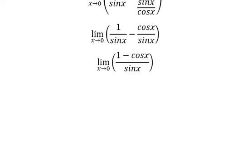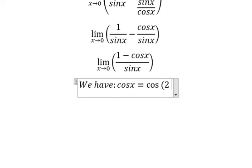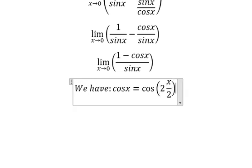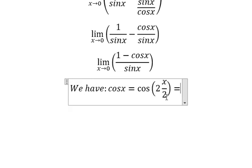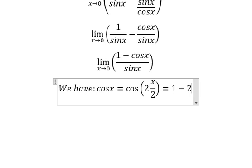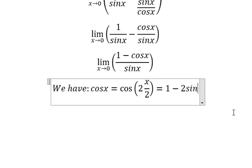Next, we have the formula here for cos x. We know that should be cos of 2 times x over 2. For this one, we can write it as 1 minus 2 sin squared of x over 2.